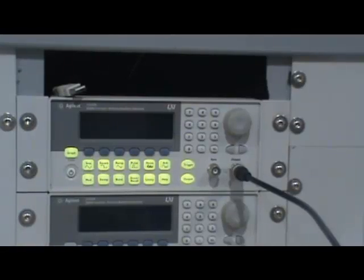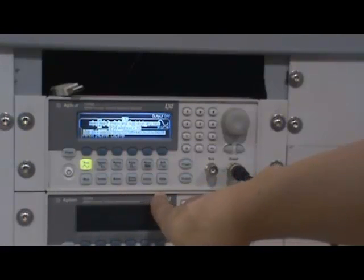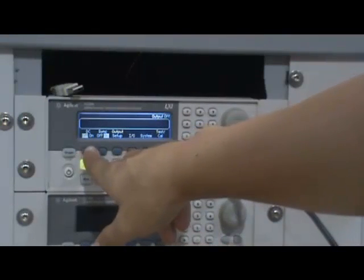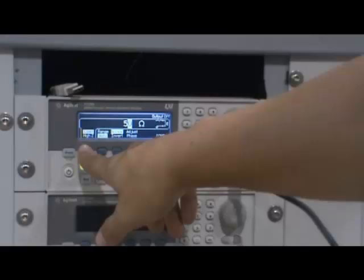Set up the function generator, turn it on, and connect the cable to the port labeled output, not the sync port. Set the function generator in the Hi-Z mode and then set the frequency to 2 kHz and the amplitude to 2 volts peak-to-peak.